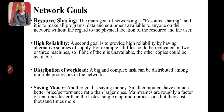Distribution of workload: big and complex tasks can be distributed among multiple processors in a network. Next, saving money: mainframe computers are 10 times faster than a single chip microprocessor, but they cost 1000 times more. So we use single chip processors in a network.